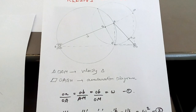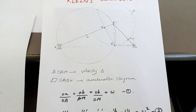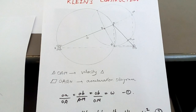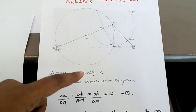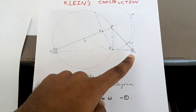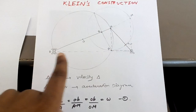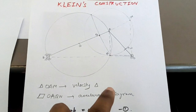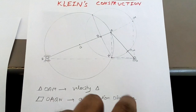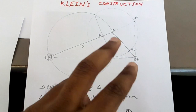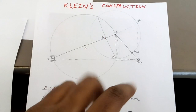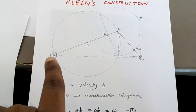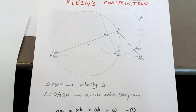In this method, the first thing you have to do is make the configuration diagram — that is, you have to draw OAB as per the dimensions given. OA is the crank, AB is the connecting rod, and B is the slider.